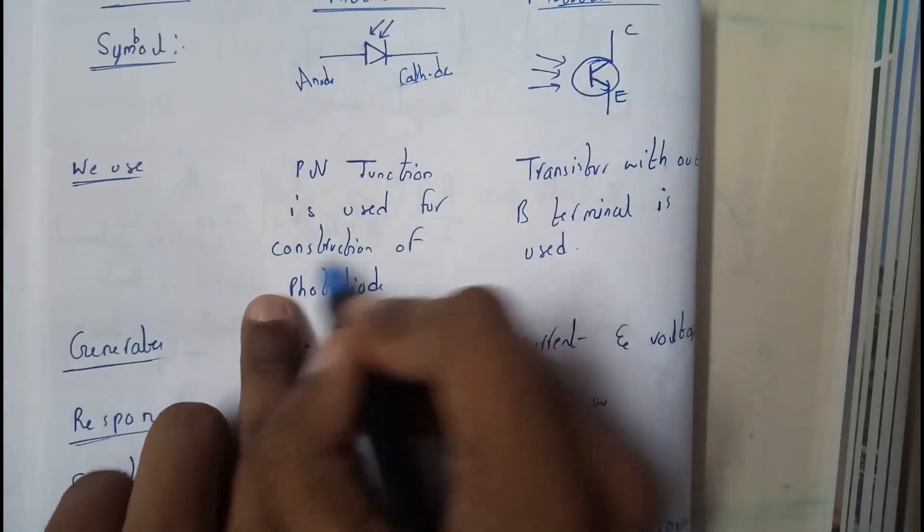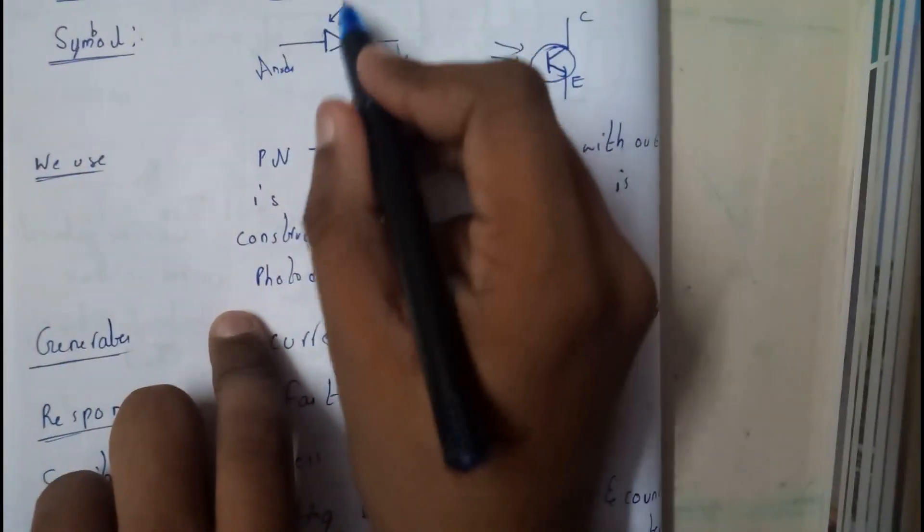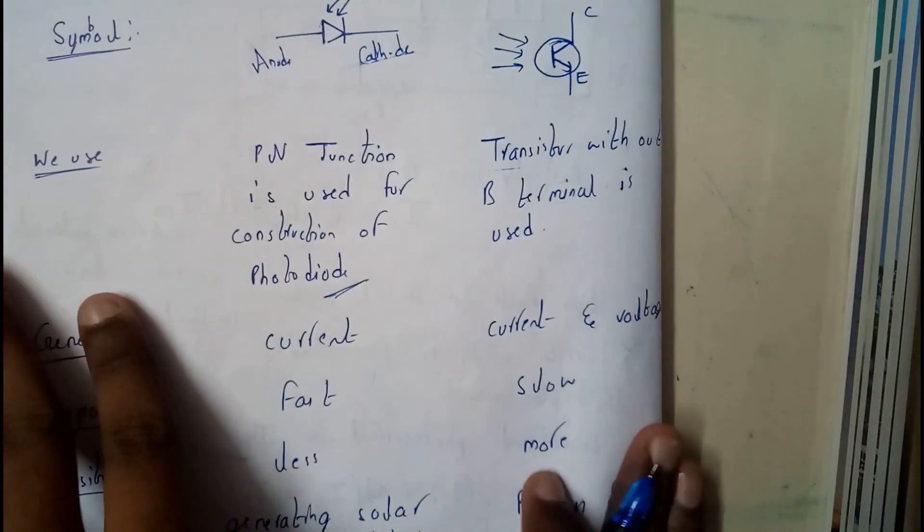This PN junction is used to construct a photodiode. For phototransistor we use a transistor. From the names - transistor, diode - what's there to confuse in that? That's really simple.